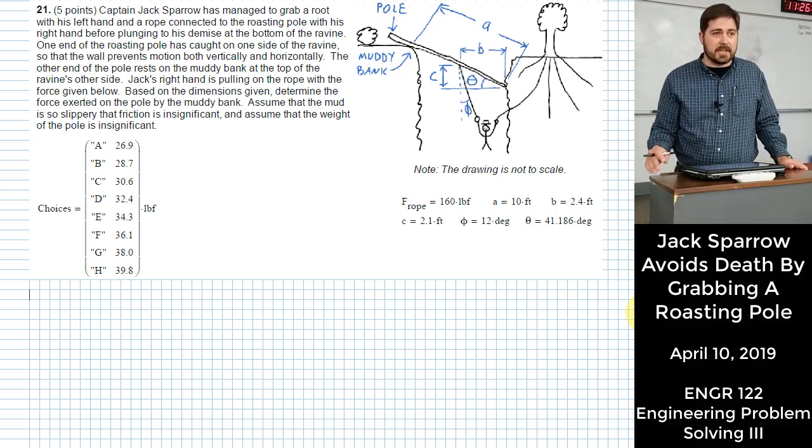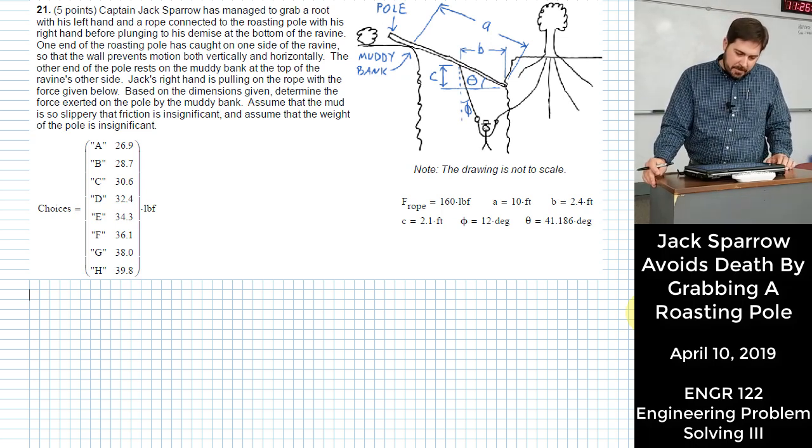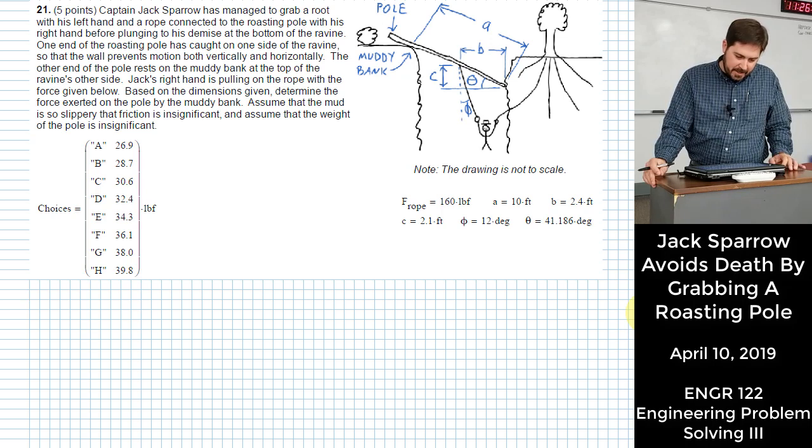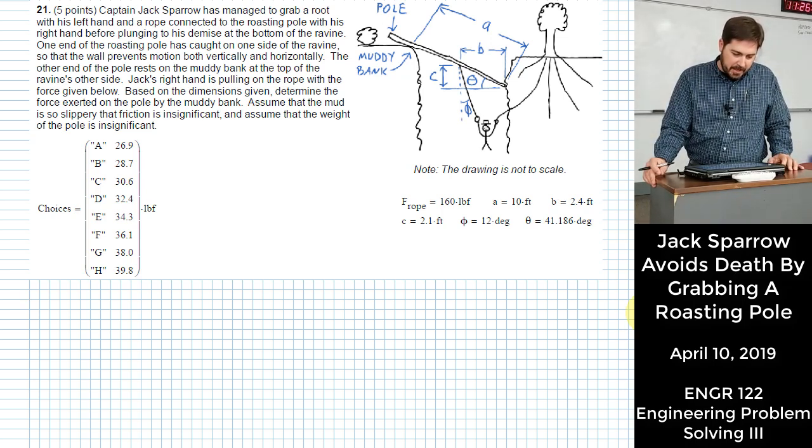All right, Captain Jack Sparrow. Let's figure this one out. It says, Captain Jack Sparrow has managed to grab a root with his left hand and a rope connecting to the roasting pole with his right hand before plunging to his demise at the bottom of the ravine.